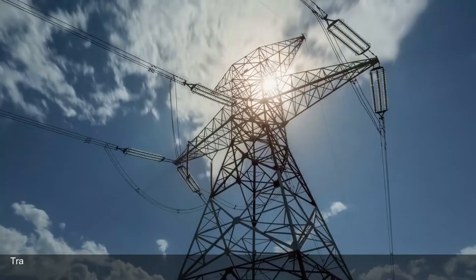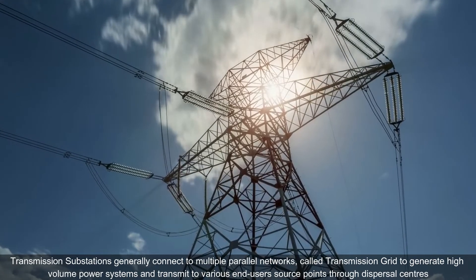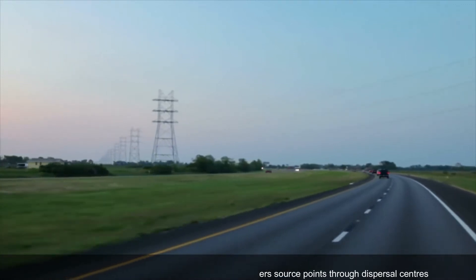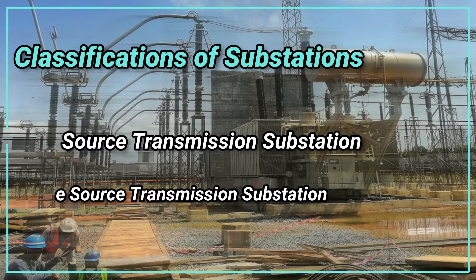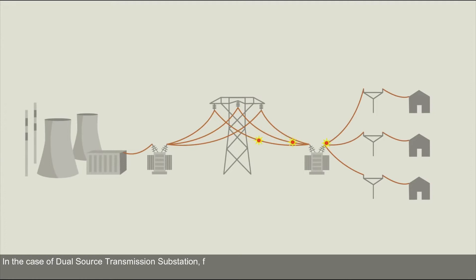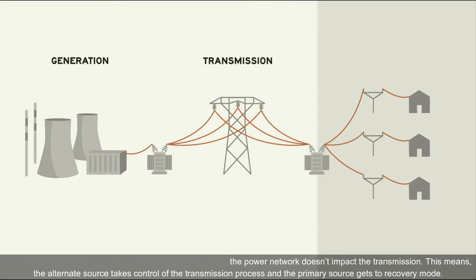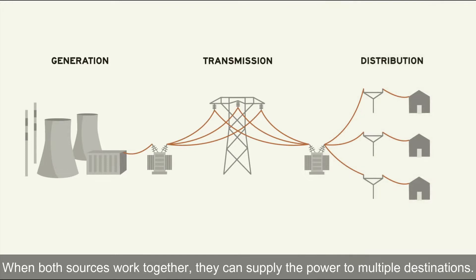Transmission substations generally connect to multiple parallel networks called the transmission grid to generate high volume power systems and transmit to various end users through dispersal centers. They are further classified into two categories: dual source and single source transmission substations. In the case of a dual source transmission substation, a fault in the power network doesn't impact the transmission, and both sources can supply power to multiple destinations.